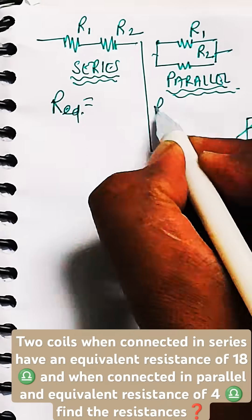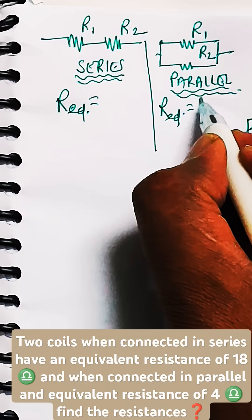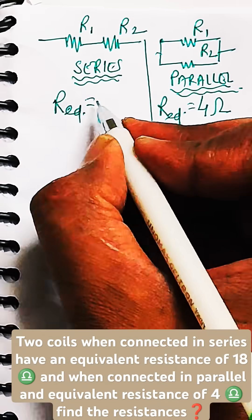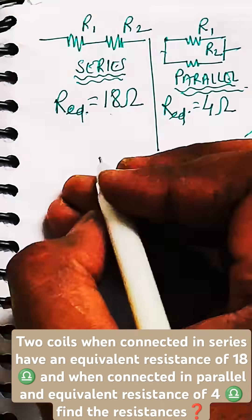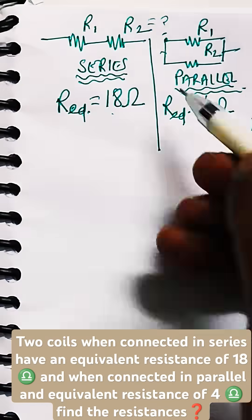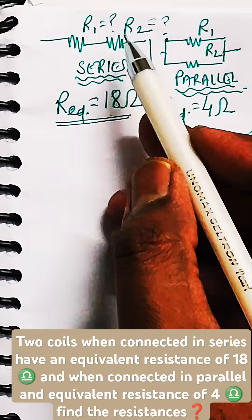We will use the formula of series connectivity and parallel connectivity. This data is given to you: equivalent resistance when connected in parallel is 4 ohm, and equivalent resistance when connected in series is 18 ohm.